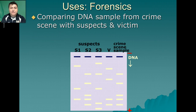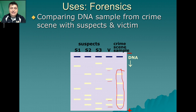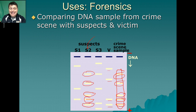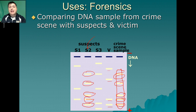We can also use DNA fingerprinting in forensics to compare DNA samples from crime scenes to suspects. We use the victim's DNA to eliminate his or her DNA from the crime scene sample. Looking at our suspects, suspect one doesn't match, but suspect two shares all the relevant bands with the crime scene, so we can say that suspect two is very likely the individual who perpetrated the crime. DNA profiling and DNA fingerprinting is a really useful, very recent tool in science, and we're still finding ways to innovate and improve this process.